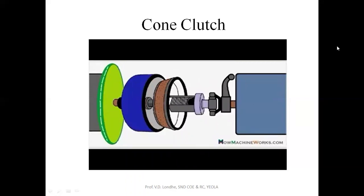The drive goes from the engine toward the flywheel, and since the female cone in blue is part of the flywheel, it also starts to rotate. The male part is currently disengaged from the female part, so no drive is going into the male cone or the transmission. The highlighted portion shows where the male cone mates with the female cone, and that is where the friction material is located.